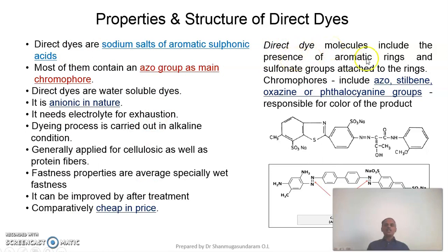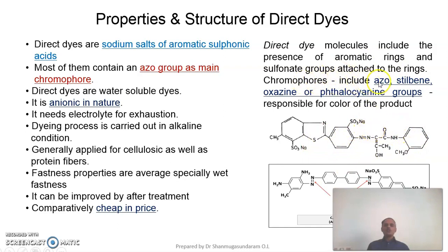The structure of direct dyes contains aromatic rings and sulfonate groups attached to the rings. Please look at the chemical structure — note the sodium salts of sulfonic acids and the aromatic rings present in the direct dyes. The chromophores are the azo group, oxazine, and phthalocyanine groups, which are responsible for the colour of the product.